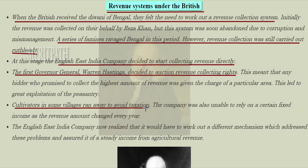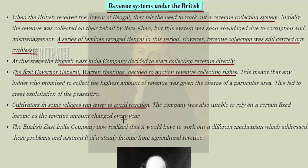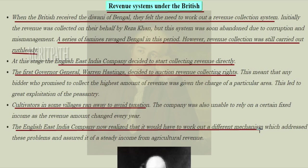Cultivators in the villages ran away to avoid taxation. The Company was unable to rely on a certain fixed income as the revenue amount changed every year. The English East India Company now realized that it would have to work out a different mechanism which addressed these problems and assured a steady income from agricultural revenue.